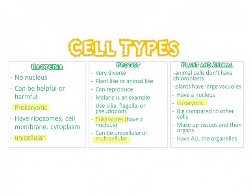Bacteria are prokaryotic cells. They're very small. Because they're prokaryotic, they don't have a nucleus, and they're the simplest type of cells that exist.